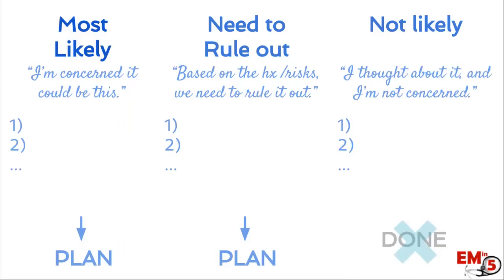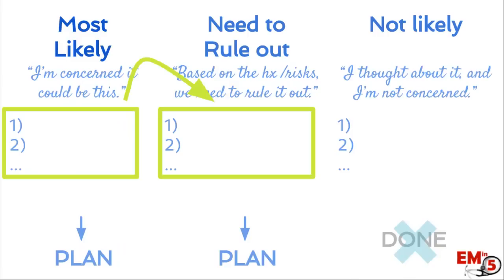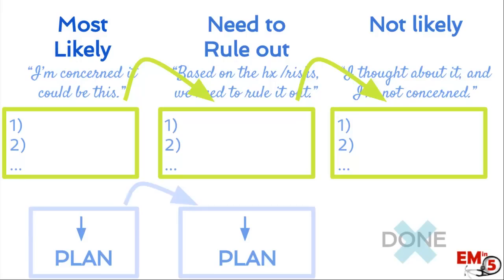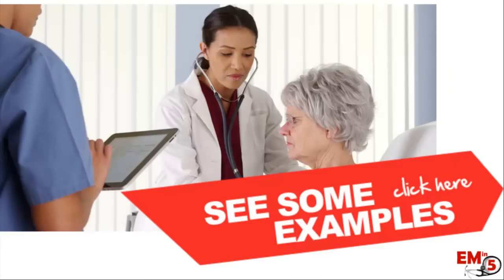Now you're all organized and ready to present to your attending. We're going to start from the top, go through each differential from each category, and then go through your plan for each of the first two columns. Let's do some examples so you can see how this works.